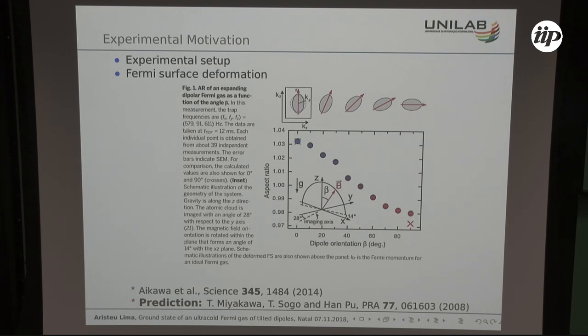So one, you get an ellipsoid, and two, the ellipsoid moves - it rotates along with the B field. These are experimental dots and the crosses here are the theory that they could compare at that time. There had been no theory for the intermediate points here.